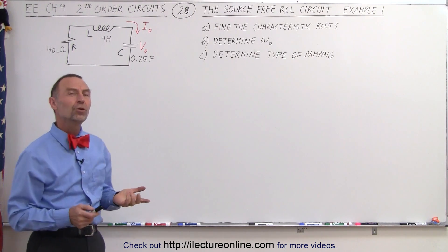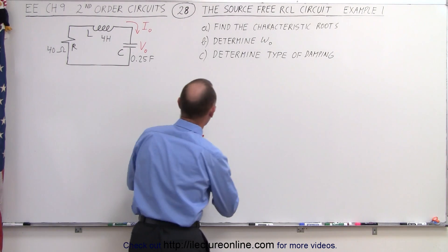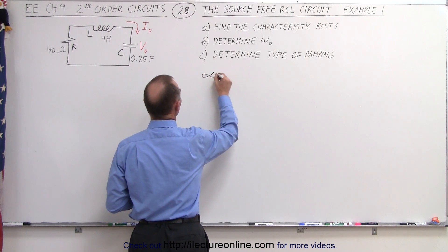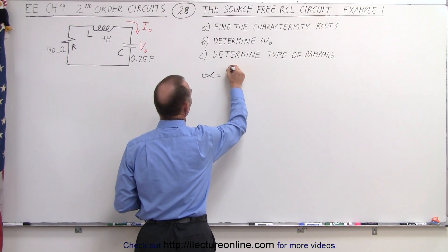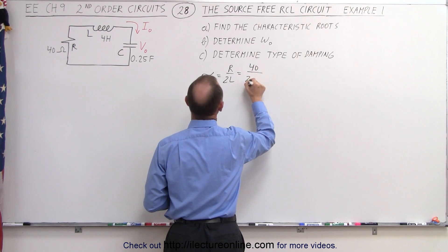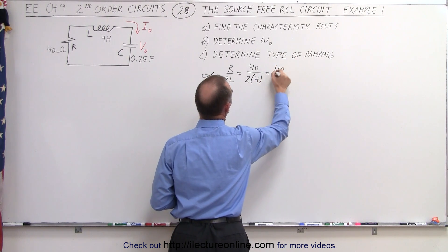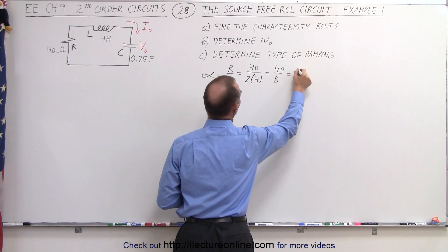The best thing to do always is to find the damping factor and the natural frequency. So let's start with that. The damping factor by definition is equal to R divided by 2L. So in this case R is 40 and L is equal to 4. That would be equal to 40 over 8 which is equal to 5.